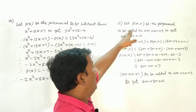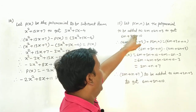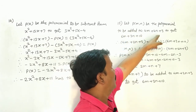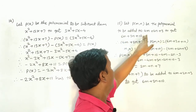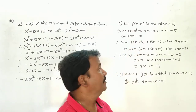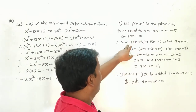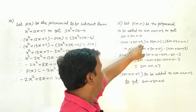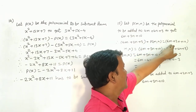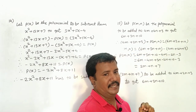Let p(m) be the polynomial to be added to 4m² + 2m + 3 to get 6m² + 3m + 10. Therefore, 4m² + 2m + 3 + p(m) is equal to 6m² + 3m + 10.